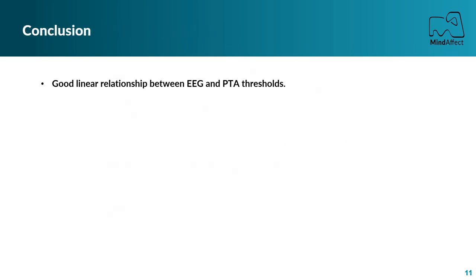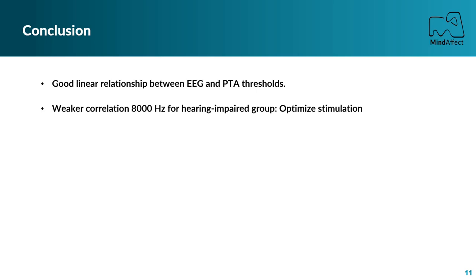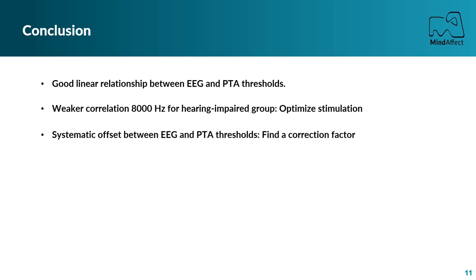In summary, our results show that EEG thresholds and PTA thresholds are strongly correlated. However, the correlation at 8000 Hz for the hearing-impaired group was weaker. To improve that, we can optimize the stimulation to present more loud tones that can be perceived and generate a satisfying AEP. We also identified a systematic offset between EEG and PTA thresholds caused by the shorter stimulus duration in this EEG test. In future research, we need to better characterize this perceptual difference in order to identify a correction factor to translate short-stimulus EEG thresholds to conventional behavioral thresholds.